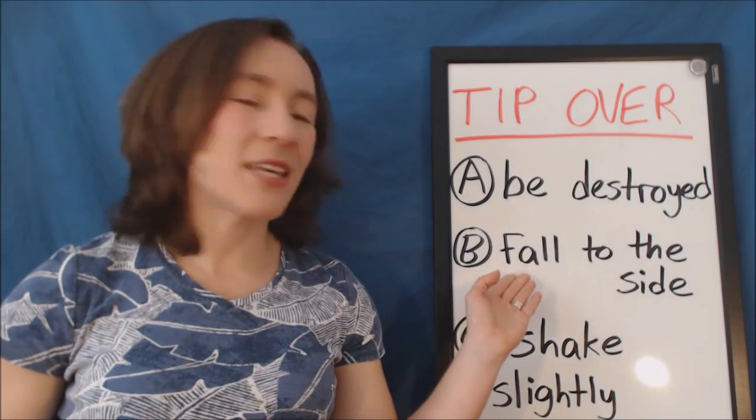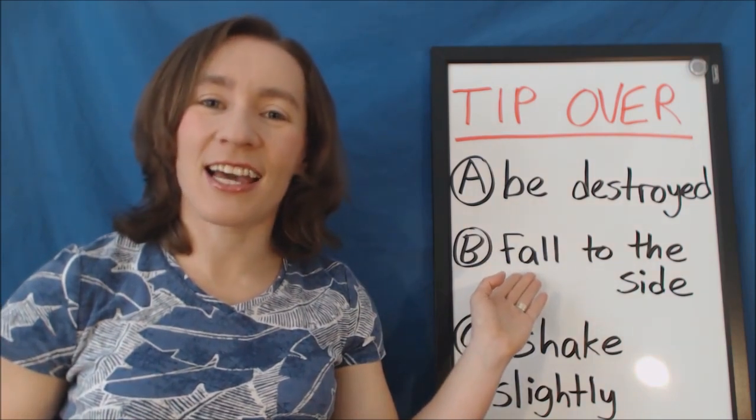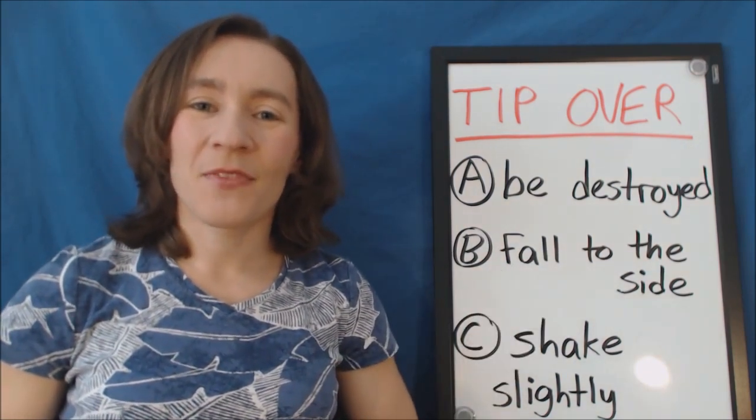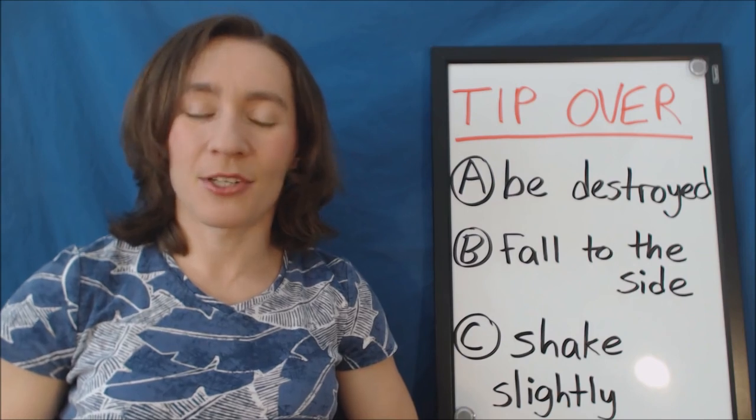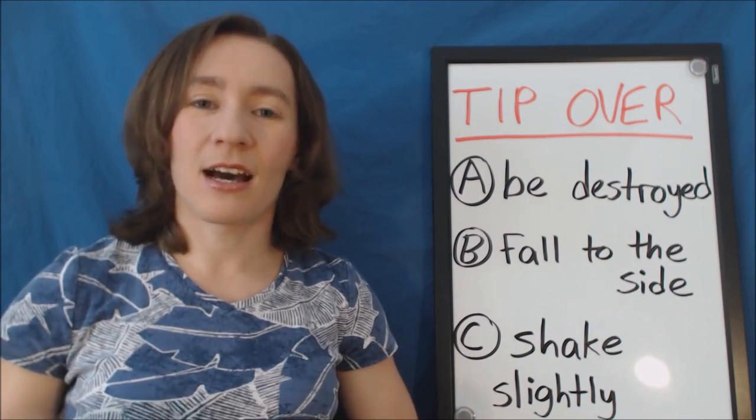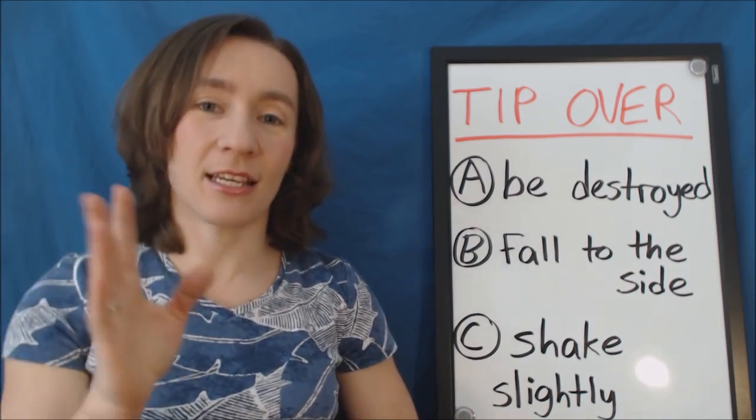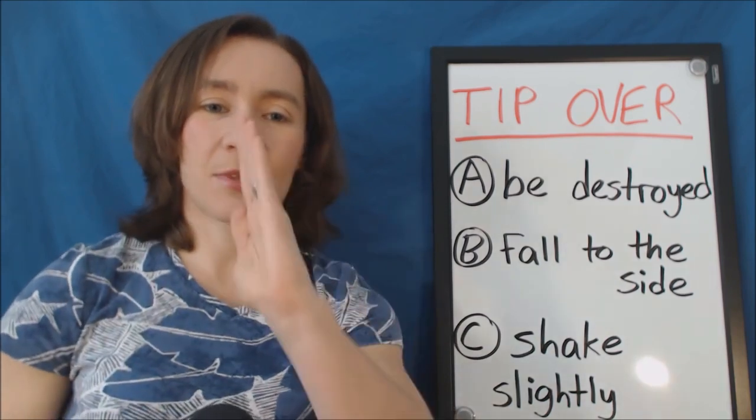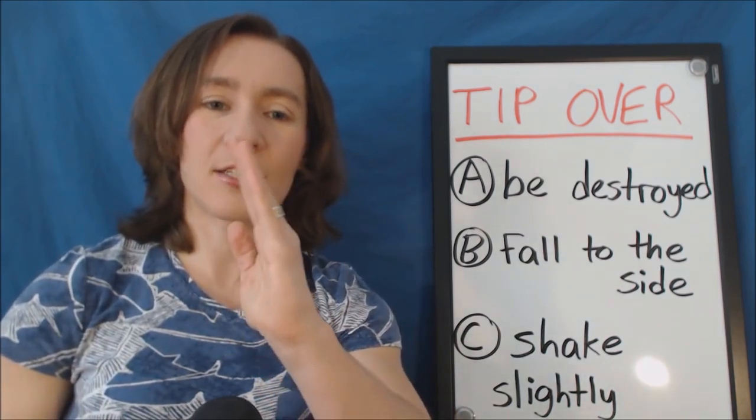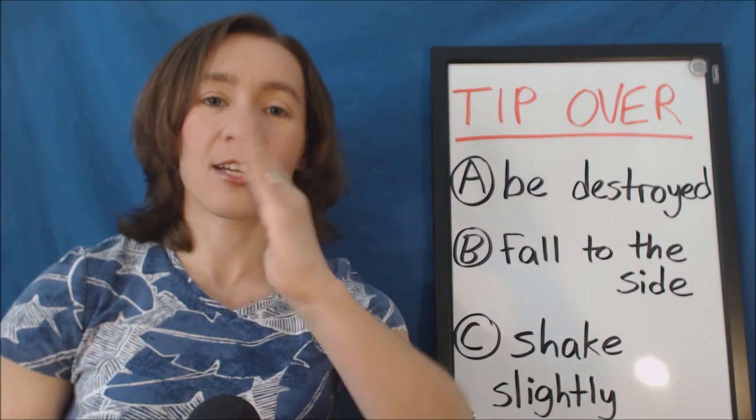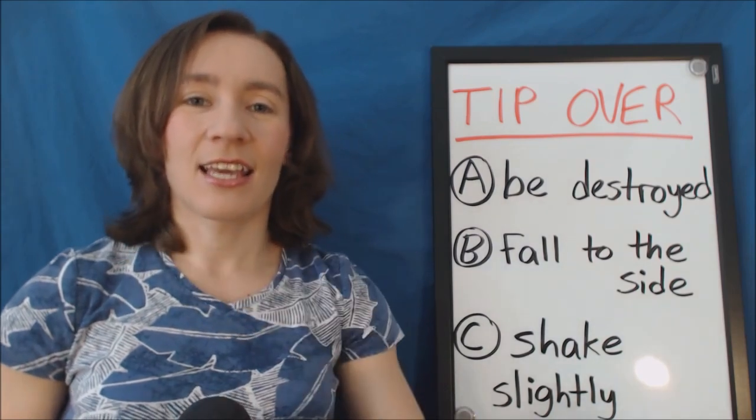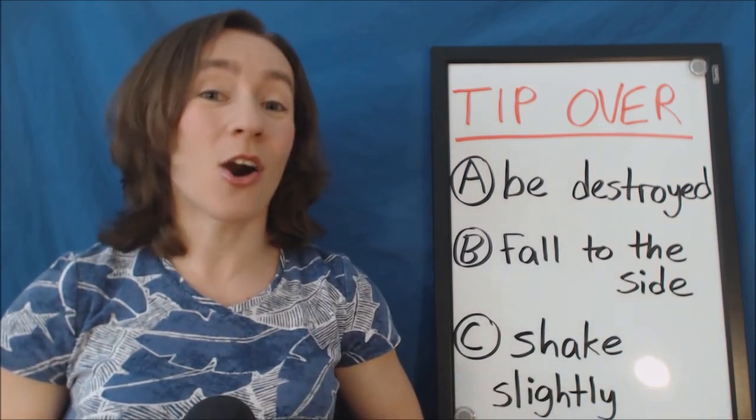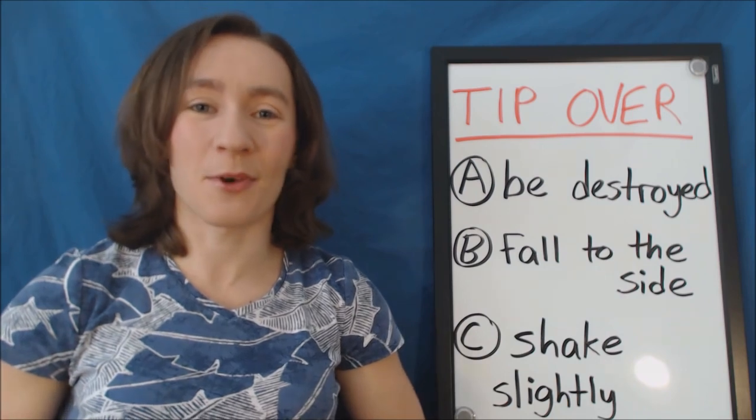Tip over means B, fall to the side. So in this situation, I bumped into a table. A table, that means my body collided with, hit a table, and then the lamp that was standing on the table started to tip over, started to fall to the side. And luckily, my husband caught it before it broke.